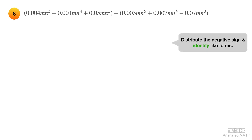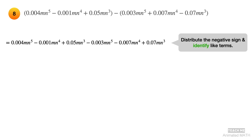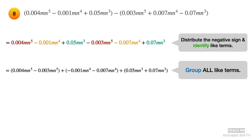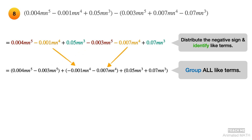Distribute the negative sign and identify like terms. Terms with variables mn raised to 5 are colored red. Terms with variables mn raised to 4 are colored yellow. Next, group all like terms and arrange them in standard form. Group the terms with variables mn raised to 5. Group the terms with variables mn raised to 4.